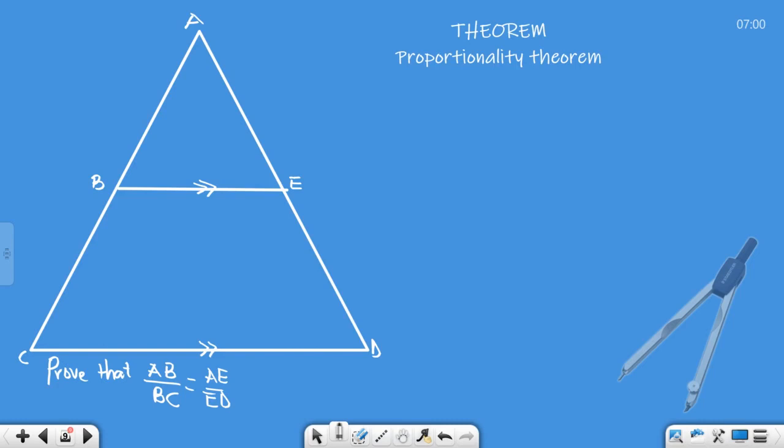This is the proportionality theorem, a grade 12 theorem where we have to prove that AB over BC equals AE over ED. The examiner could use different letters like AB over AC or AE over AD, but the process is the same.